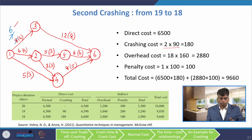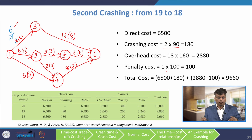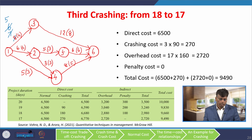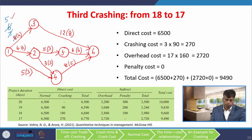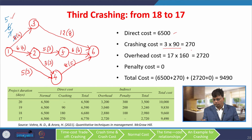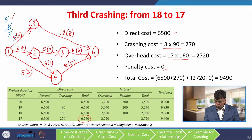Third crashing: from 18 to 17 days. Activity 1-3 is reduced by a total of 3 days (from 8 to 5). Direct cost: 6,500 + 3 × 90 = 6,770. Overhead: 17 × 160 = 2,720. There is no penalty cost because the project is exactly at 17 days. Total cost = 6,770 + 2,720 = 9,490 rupees. The cost is decreasing, indicating we can reduce further.